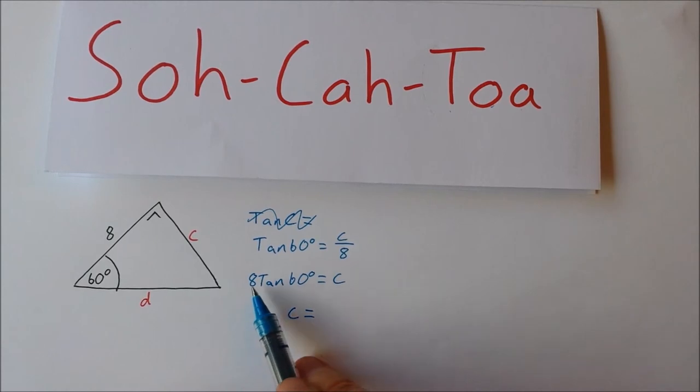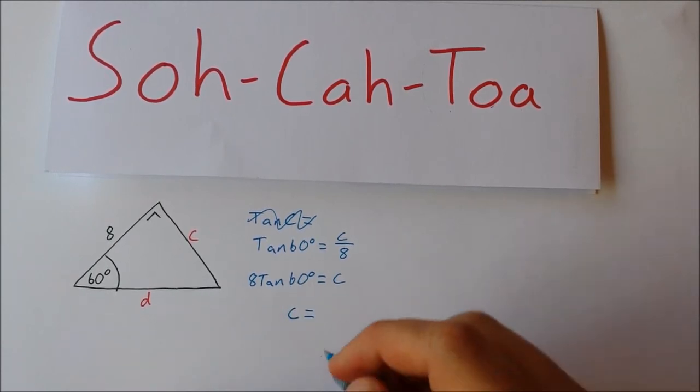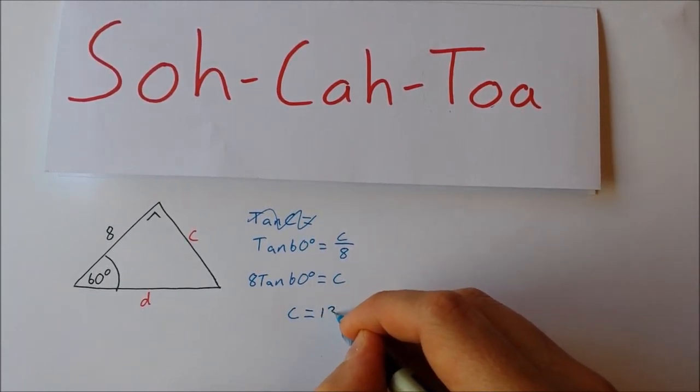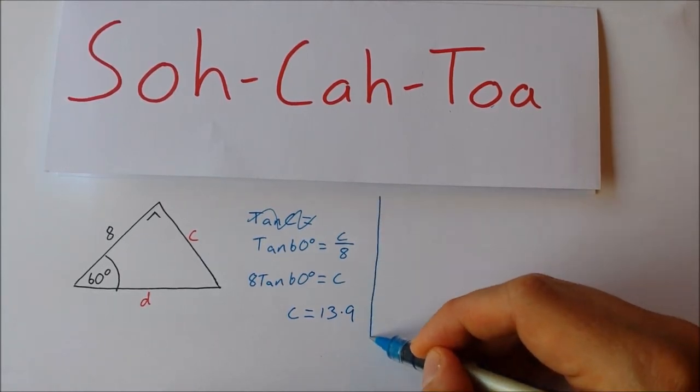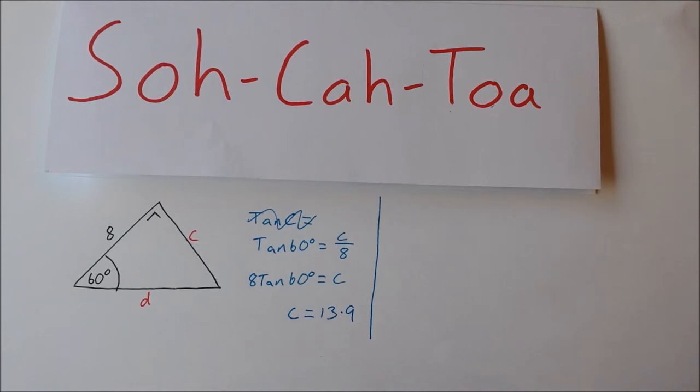Type that straight into your calculator: 8 tan 60, and you should get 13.9.